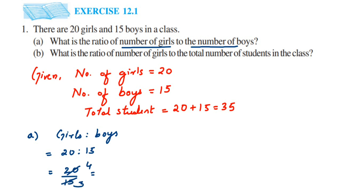We cancel in the five times table — five fours are 20, five threes are 15 — so this gives us 4 by 3. Converting back into ratio form, it becomes 4 is to 3. So the ratio of number of girls to number of boys is 4 is to 3.